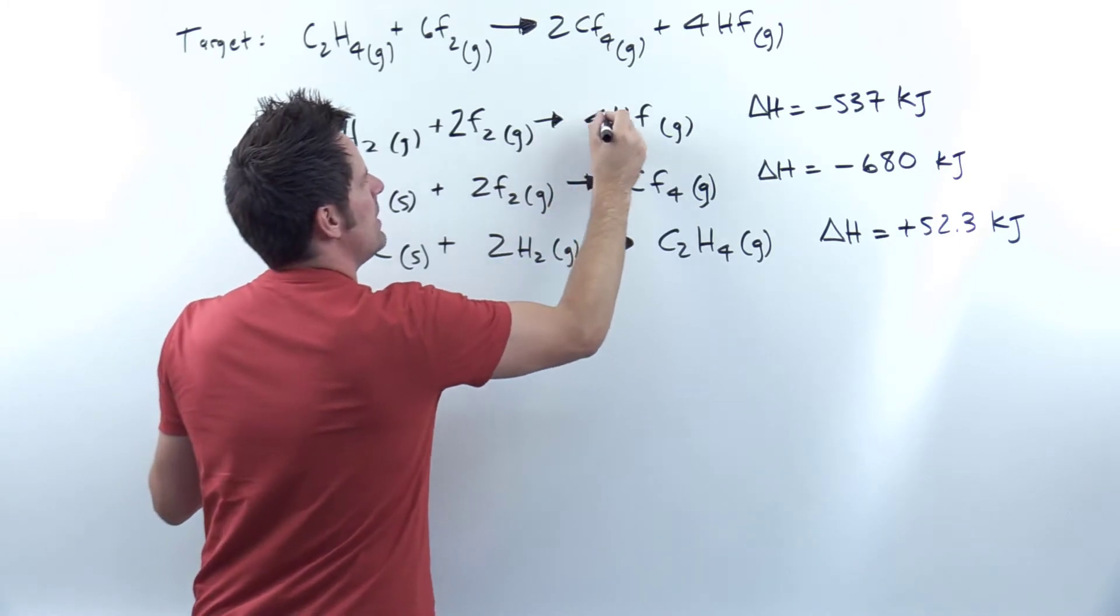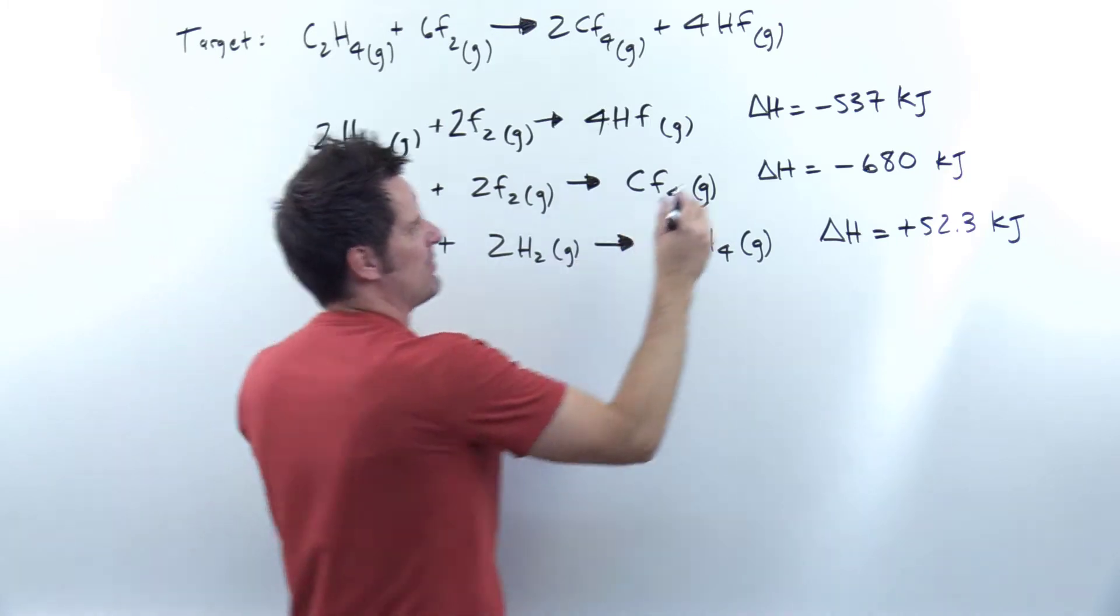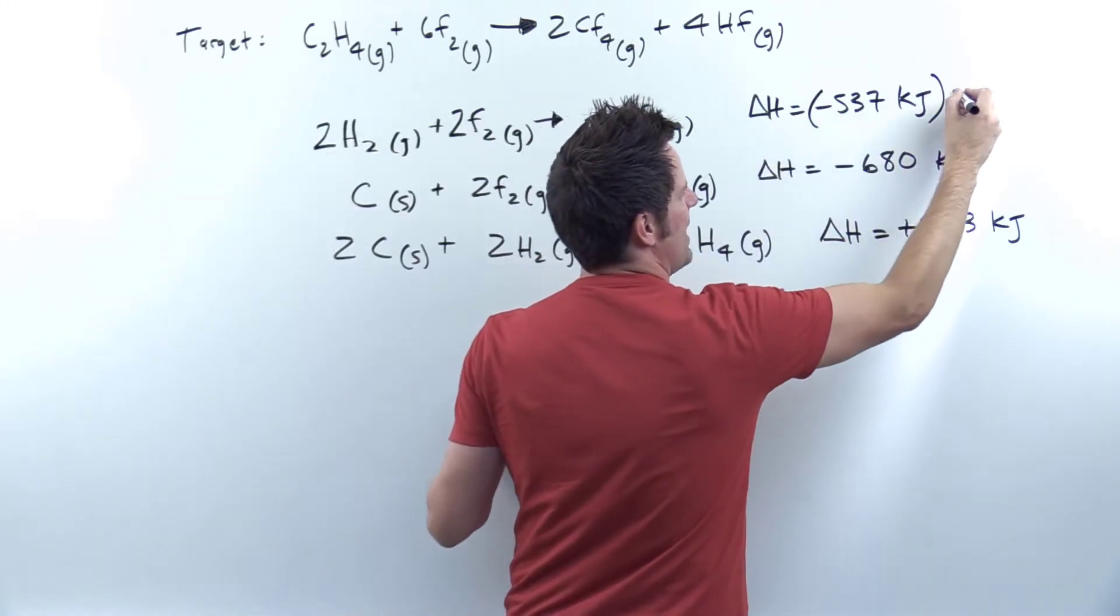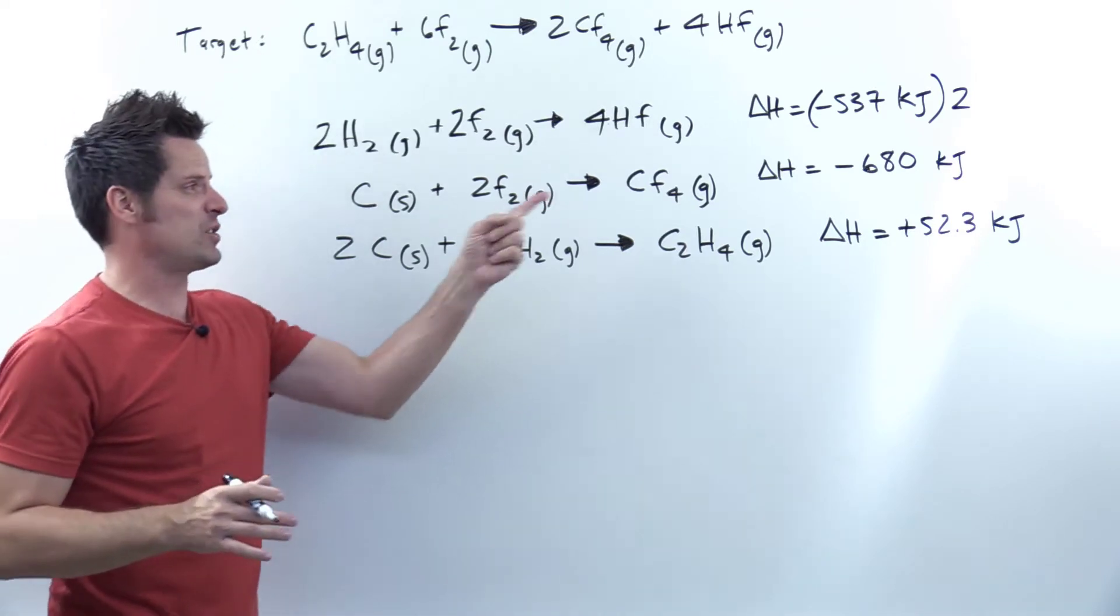If I've times everything by two, in order to get the correct delta H now, I have to take that number and also multiply that by two, which I'm going to just write down in that way. We'll figure out the answer on that later.